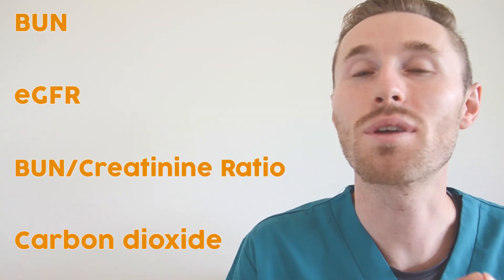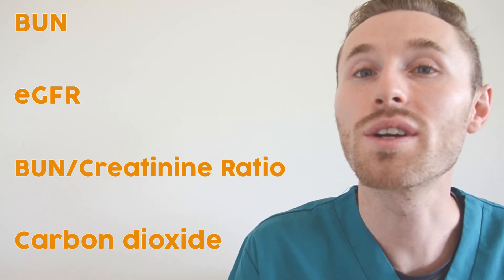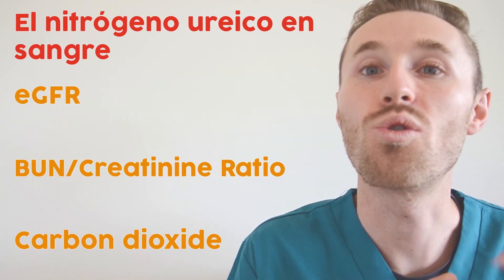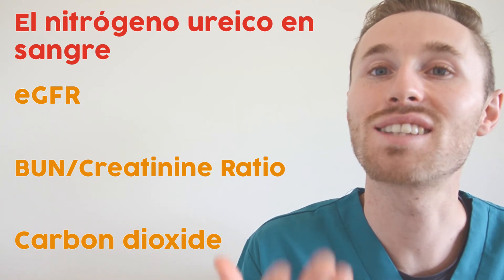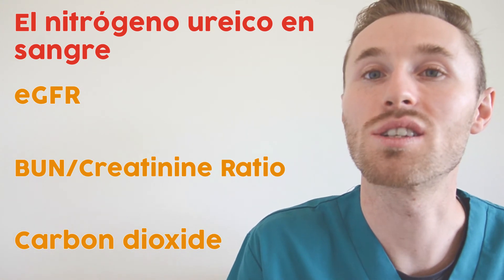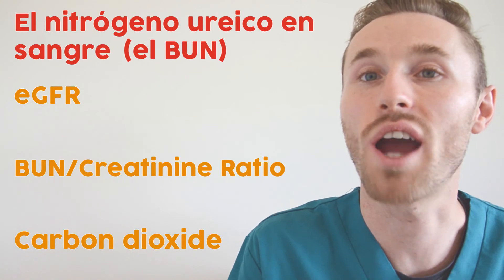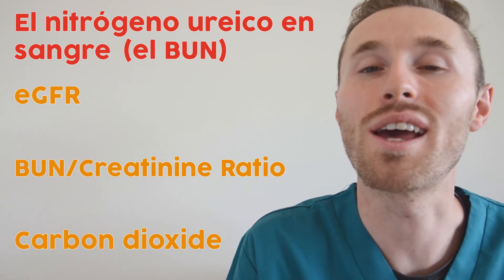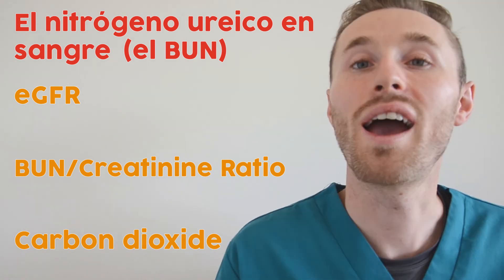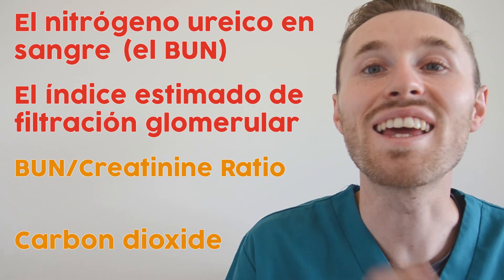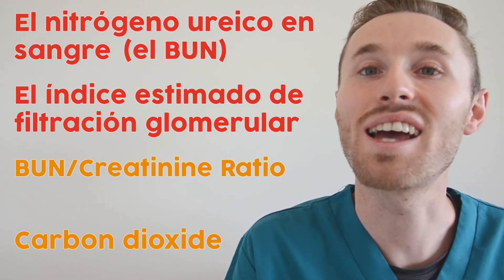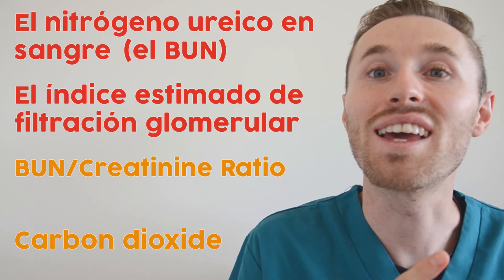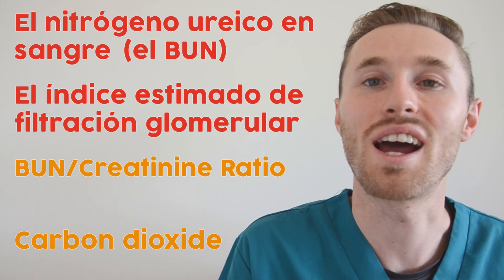Looking at the BMP components that aren't as easy to translate: blood urea nitrogen in Spanish would be 'el nitrógeno ureico en sangre.' It might be easier with your patients to say 'el B-U-N' using the English acronym — you might even hear some patients refer to it as 'el bun,' pronouncing it as a word. The eGFR in Spanish would be 'el índice estimado de filtración glomerular.'